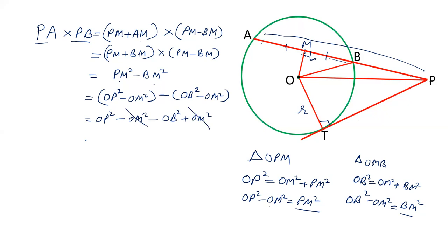We have OP squared minus OB squared. Now what is OB? OB is radius, and OT is also radius. So in place of OB we can put OT. OP squared minus OT squared.